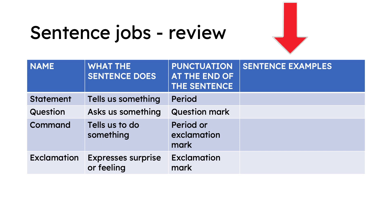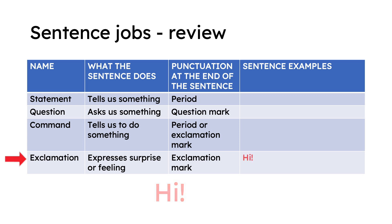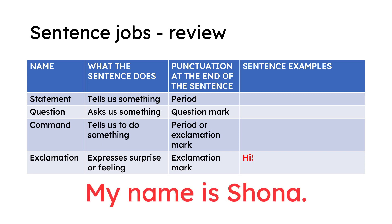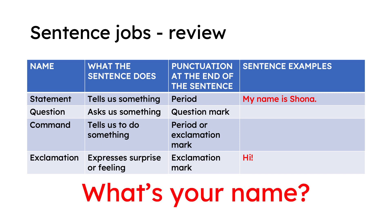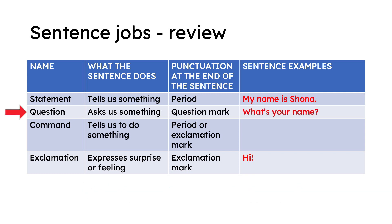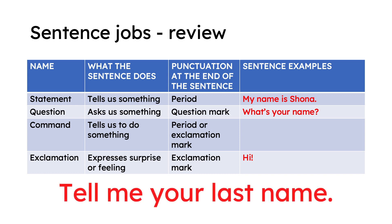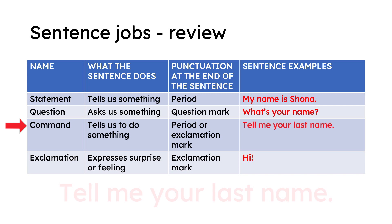Let's finish our chart with some sentence examples. I'm giving you just a few examples — there are many you could put on this chart. 'Hi!' — this sentence is an exclamation. 'My name is Shona.' — this sentence is a statement, so it goes in the top row. 'What's your name?' — this sentence is a question, we'll put it in the second row. 'Tell me your last name.' — it's a command, it goes in the third row.